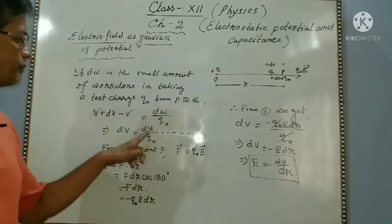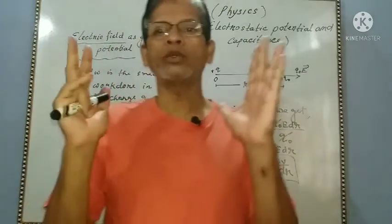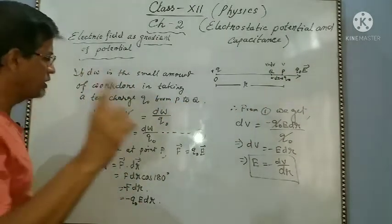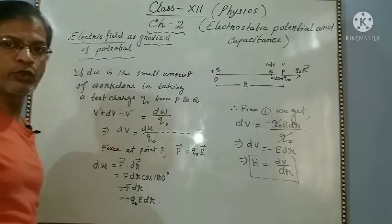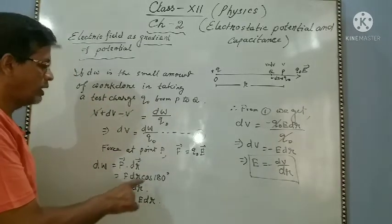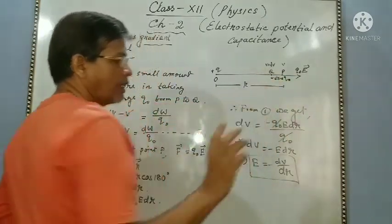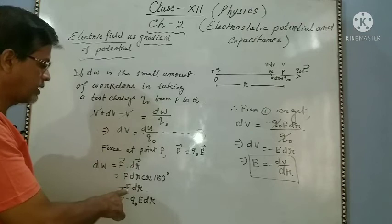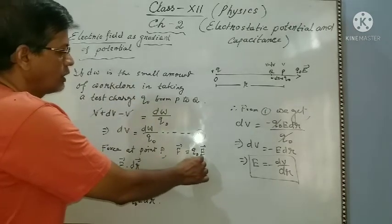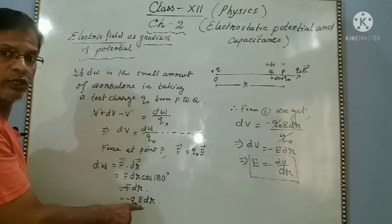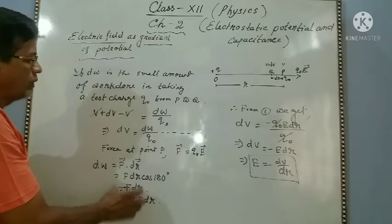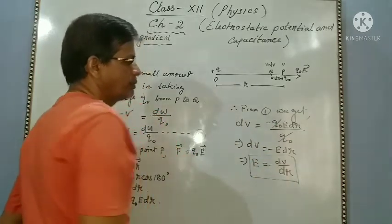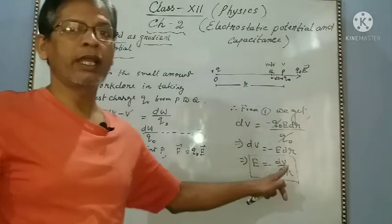So dV equals dW by Q naught. The small work done from P to Q is the dot product of force and displacement. The force and displacement are in opposite directions, angle 180 degrees, so cos 180 is minus 1, giving minus F dr. Since F equals Q naught E, we get dW equal to minus Q naught E dr. Substituting into equation 1, Q naught cancels, giving dV equal to minus E dr, so E equal to minus dV by dr.